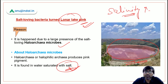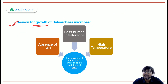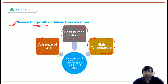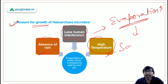These microbes produce pink pigment when they get favourable conditions. According to this report, there are three reasons for their growth: number one is absence of rain, number two is less human interference, and number three is high temperature. Because of these three reasons, evaporation is increasing.